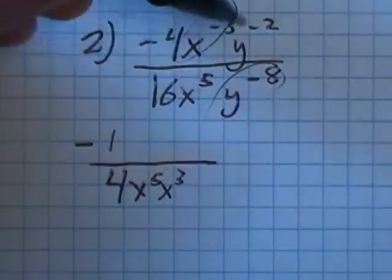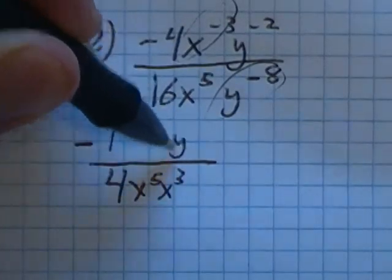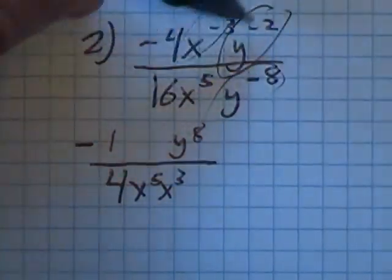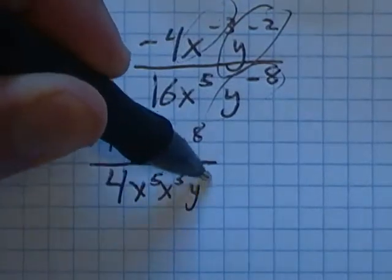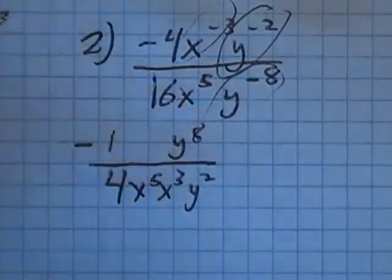Similarly, with these y's, y to the negative eighth takes the reciprocal of it, it flips that piece of the fraction. So y to the eighth, and then y to the negative two, that pushes this down. Notice the only things that move are things that were taken to a negative power.